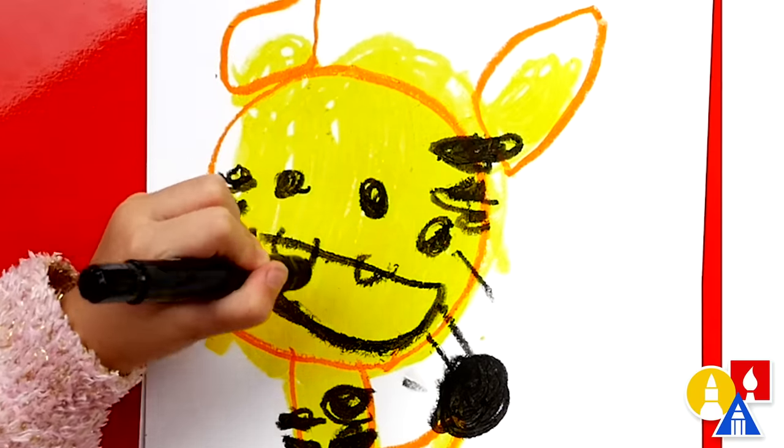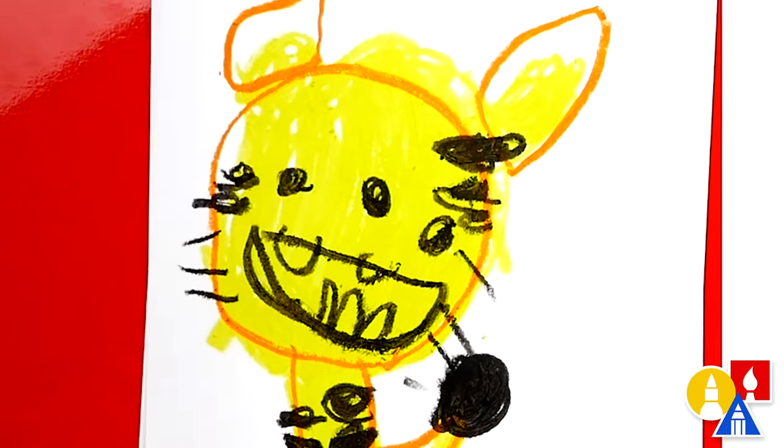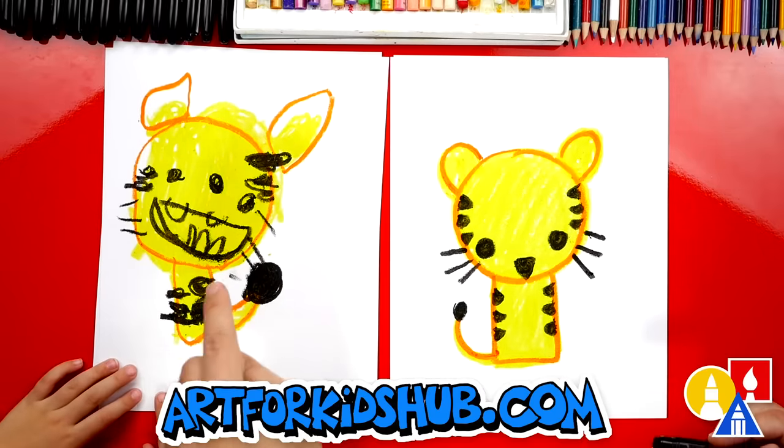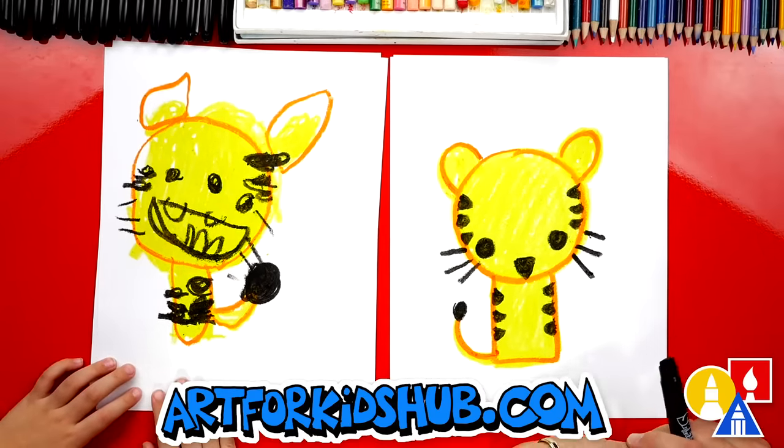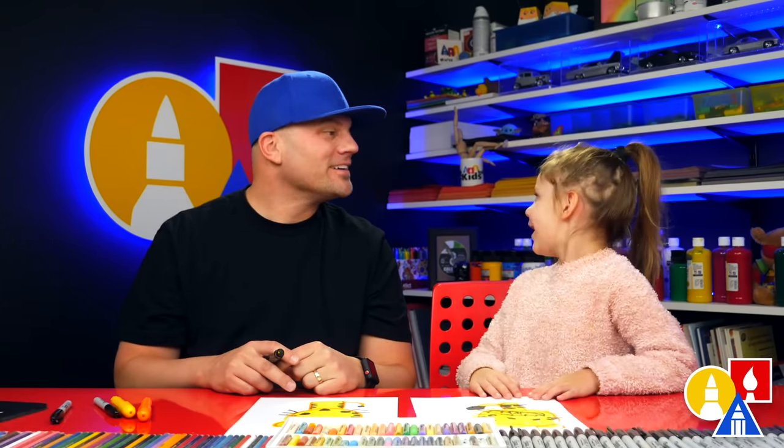And... oh, teeth. Oh, I love your teeth. I don't have any room for a mouth. But the next time I draw my tiger, I'm going to draw a mouth like that with sharp teeth. Yeah. Or soft teeth. Oh, soft teeth, so it's friendly. Yeah.